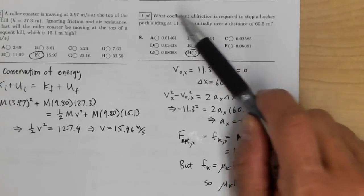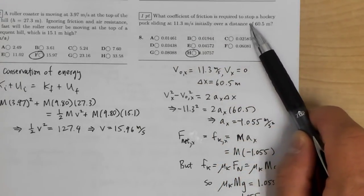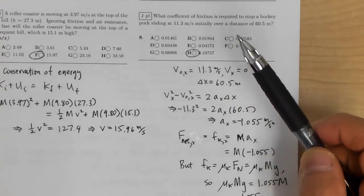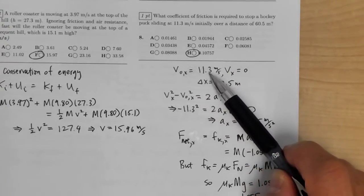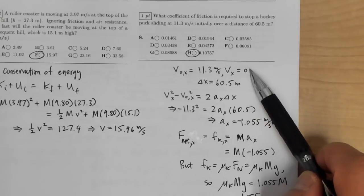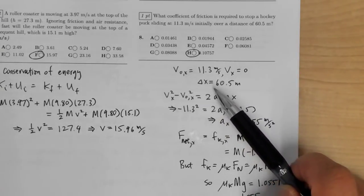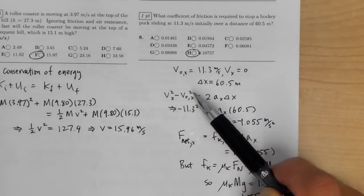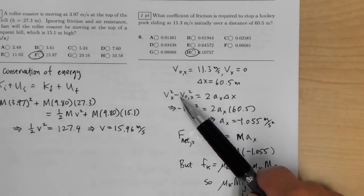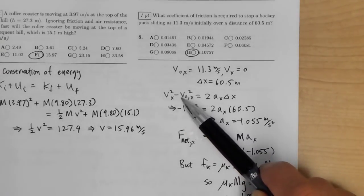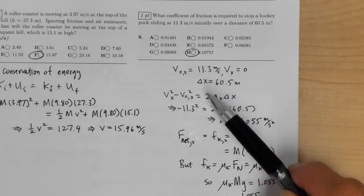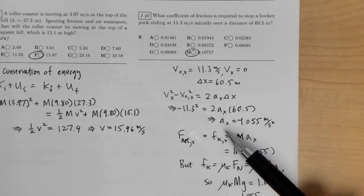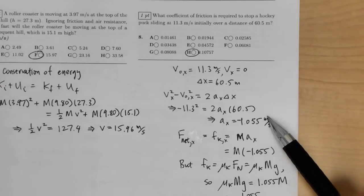What coefficient of friction is required to stop a hockey puck sliding at 11.3 m/s over a distance of 16.5 meters? Using Vx² − V₀x² = 2ax·Δx: 0 − (11.3)² = 2·ax·(60.5), which gives ax = −1.055 m/s².